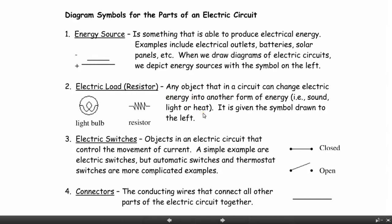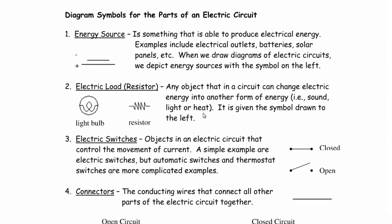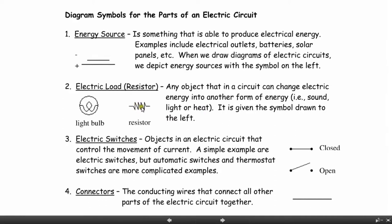Electric loads can take on very different forms. Electric loads are anything that transform electric potential energy into a different form of energy, such as light, sound, or heat. Resistors are usually shown as squiggly lines that are connected from one conductor to another in an object. A light bulb has a more complex look to its symbol.